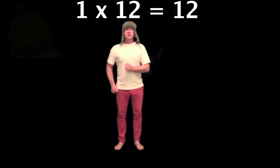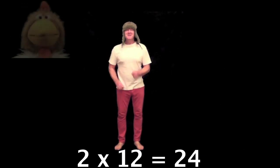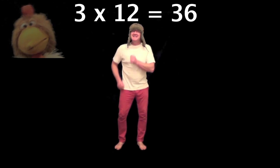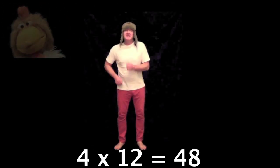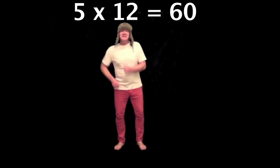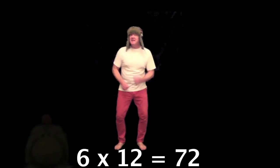1 times 12 is 12, 2 times 12 is 24, 3 times 12 is 36, 4 times 12 is 48, 5 times 12 is 60, 6 times 12 is 72.